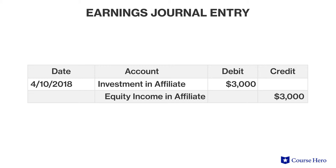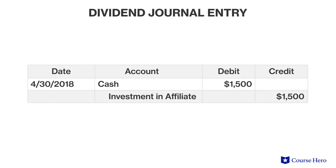In contrast to the cost method, the investment asset in the equity method is written up to reflect earnings but not changes in market value. Note that Ace Company recognized this proportionate amount of net income regardless of whether Bay Company pays dividends. Now assume that Bay Company declares a dividend of $5,000 on April 30th. Under the equity method, dividends received are considered a return of invested capital and thus reduce the investment account. Ace Company would recognize its share — 30% of $5,000, or $1,500 — which reduces the investment in affiliate account with a credit of $1,500.